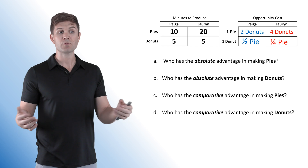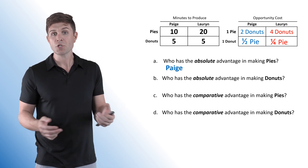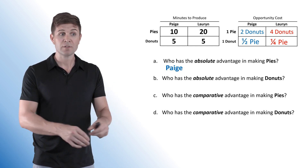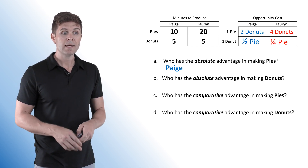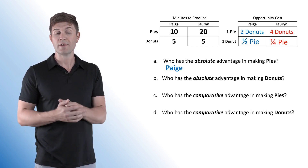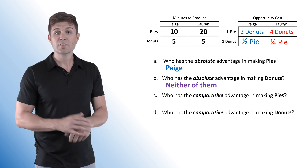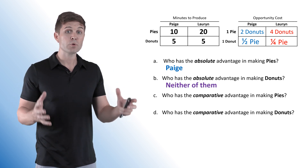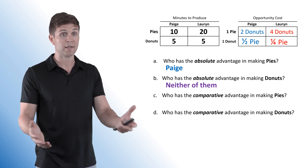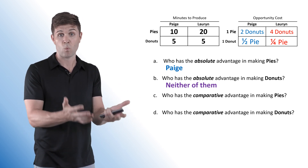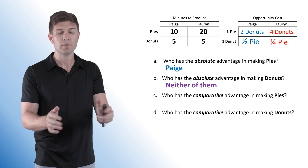Who has the absolute advantage in making pies? That goes to Paige — she produces a pie in 10 minutes while it takes Lauren 20 minutes. Who has the absolute advantage in making donuts? Neither of them. They both take the same amount of time to produce one donut, so their productivity is exactly the same.